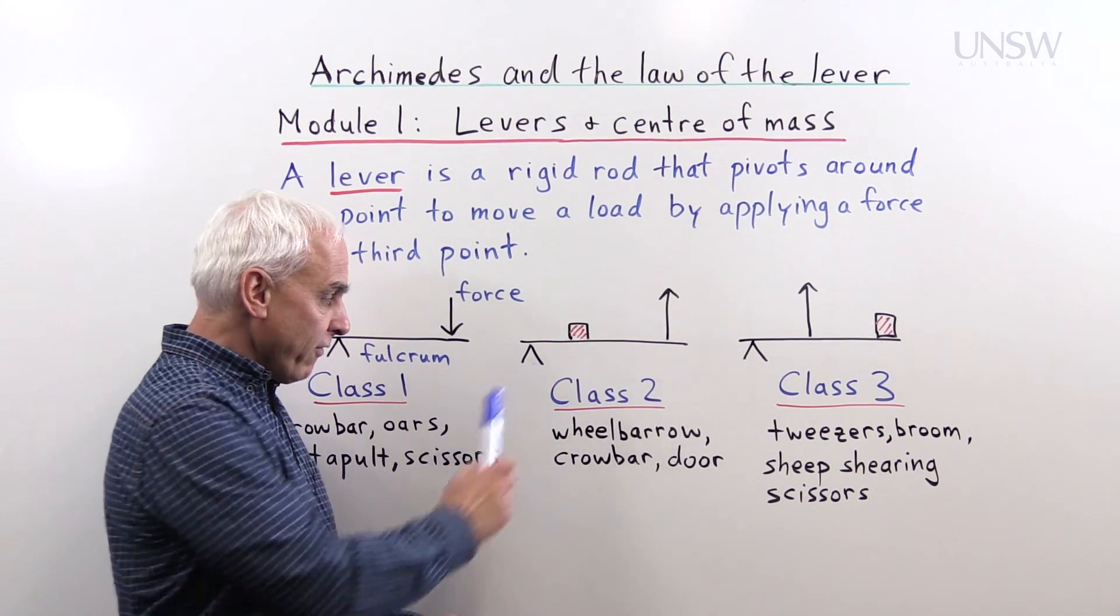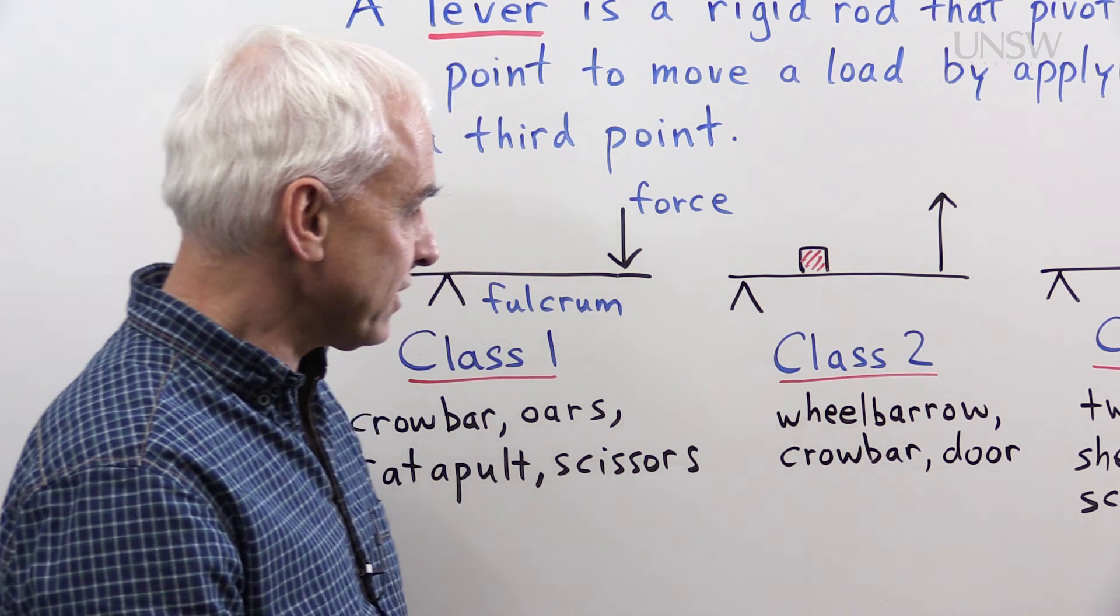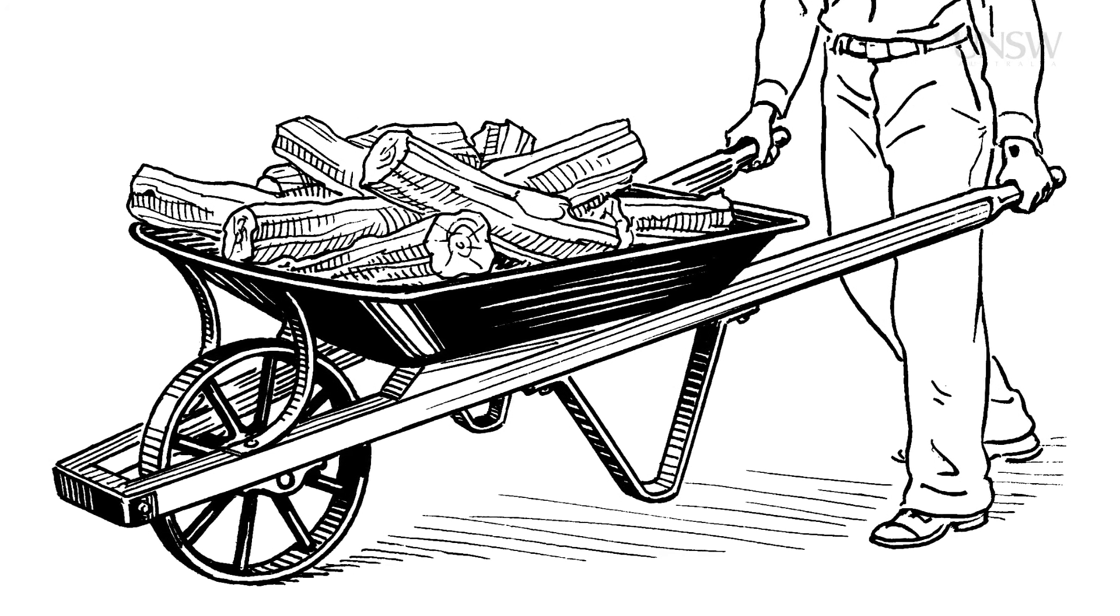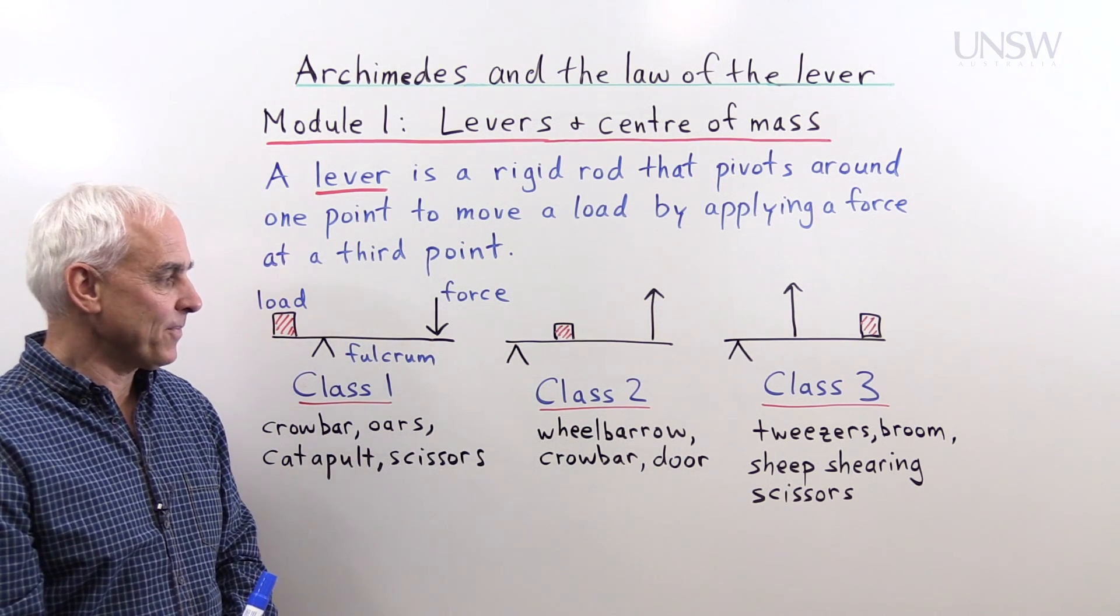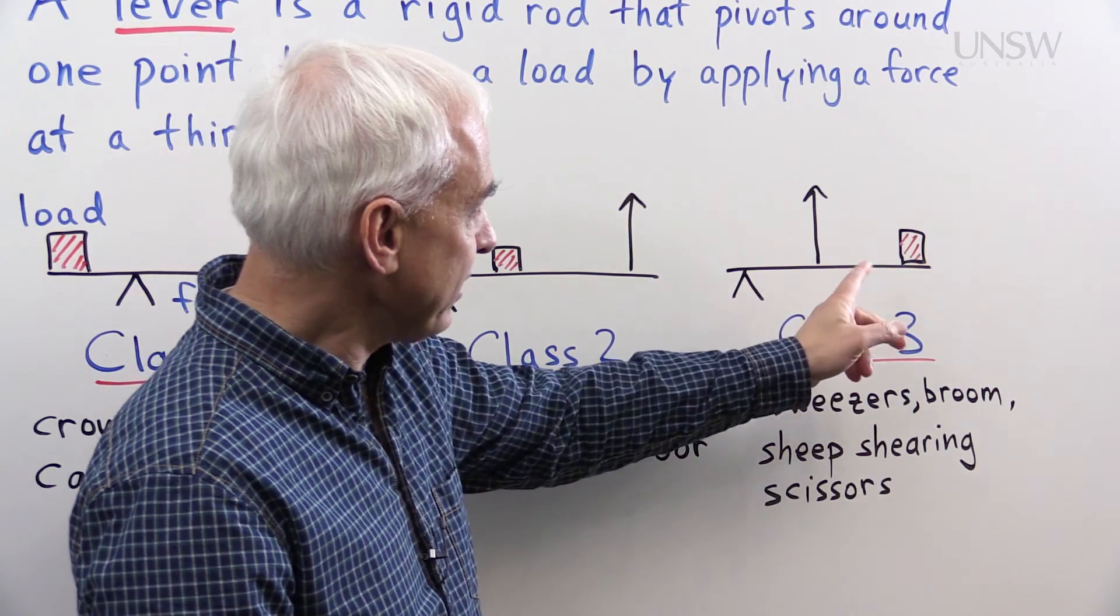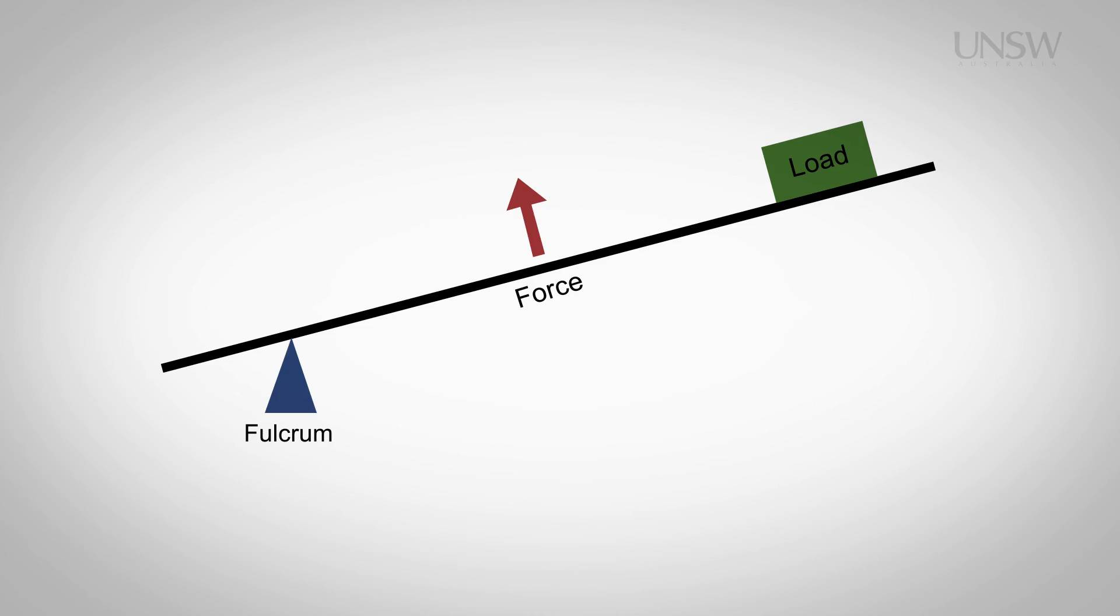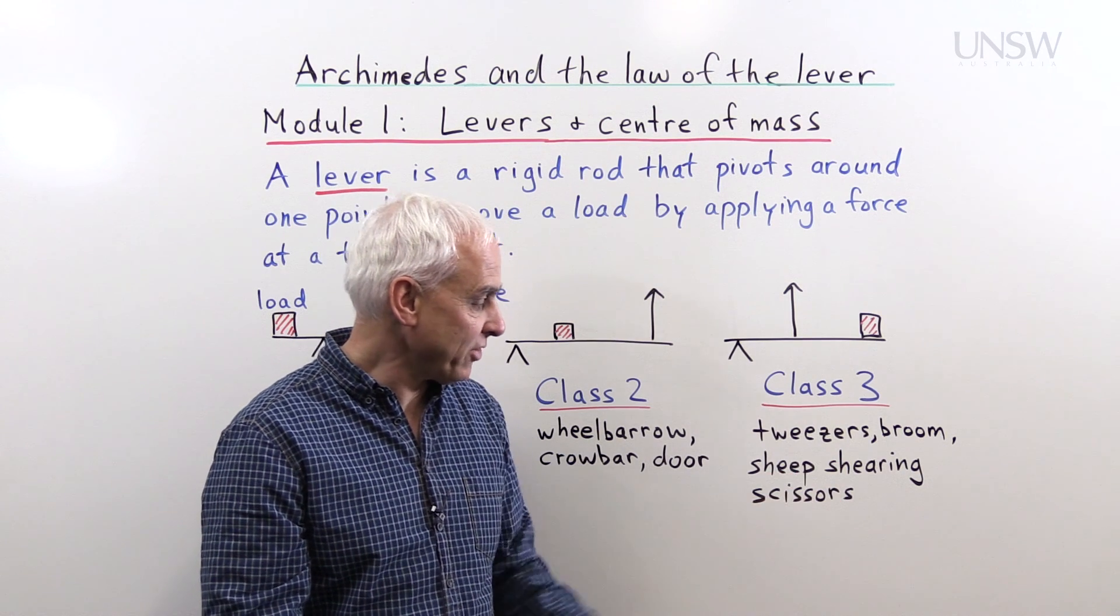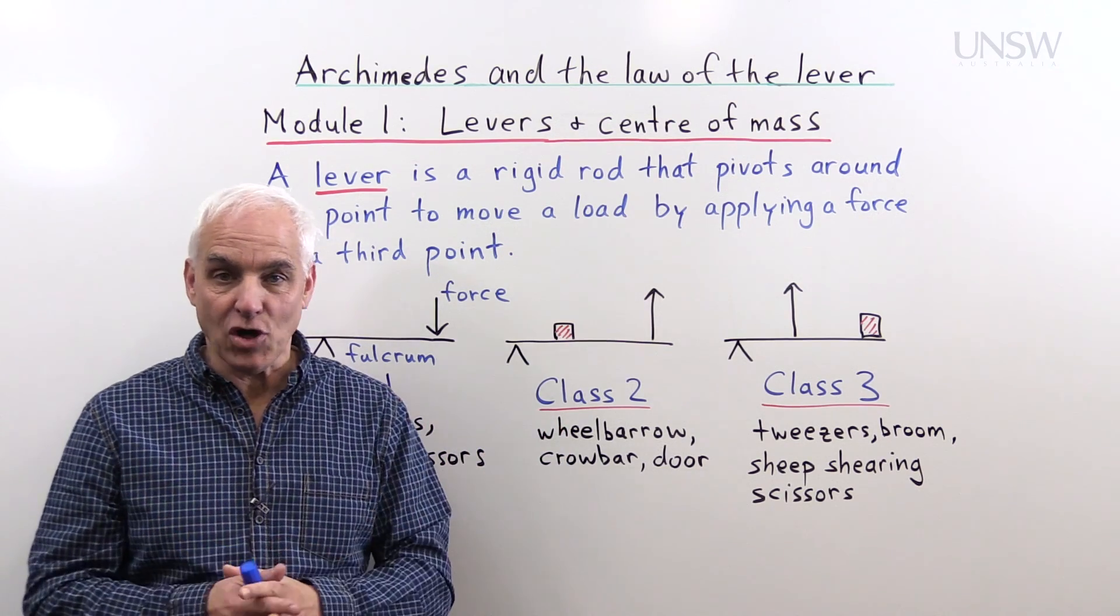With a class two lever, we have the fulcrum on one side, and the load in between the fulcrum and the force. And the standard example of that is a wheelbarrow. But a crowbar can also be used in this fashion. And if you think about it, a door is really a kind of example of such a lever as well. A class three lever has also the fulcrum on one end, but now the force is in between the fulcrum and the load. A pair of tweezers is a class three lever, as is a broom or a hockey stick. In Australia, sheep shearing scissors are also of this form. So these are the three basic classes of levers.